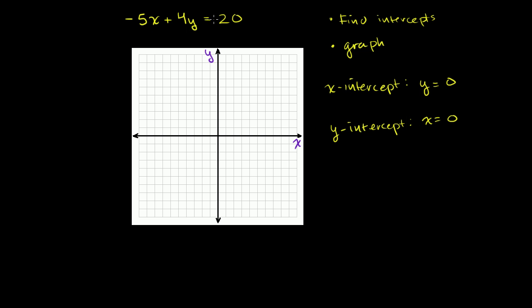So to figure out the intercepts, let's set y equal to 0 in this equation and solve for x. And then let's set x equal to 0 and then solve for y. So when y is equal to 0, what does this equation become? I'll do it in orange.